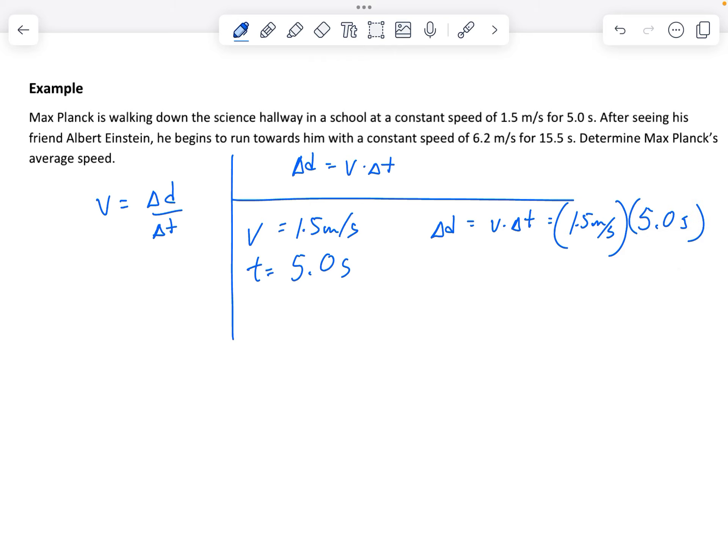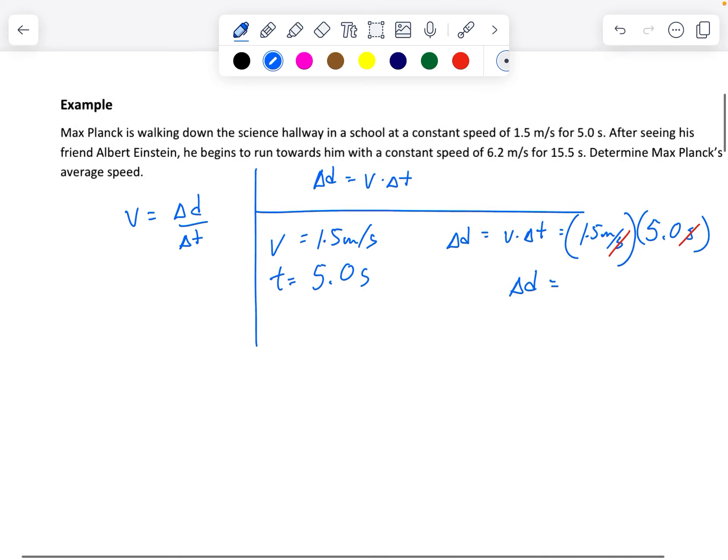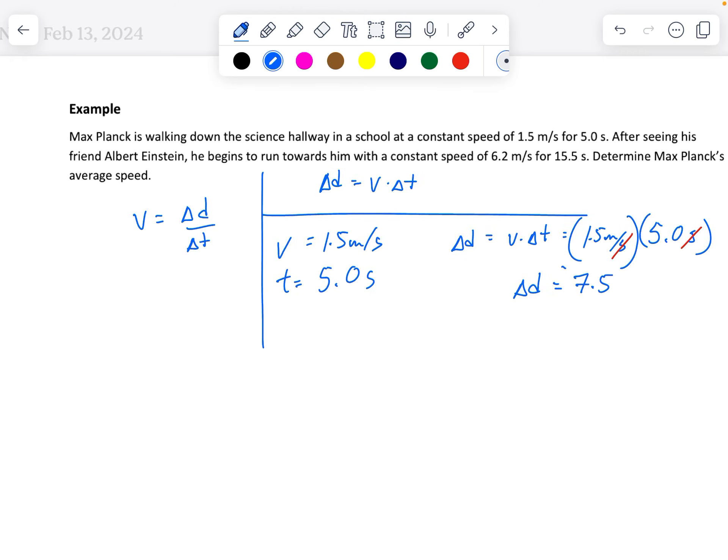Now my units are going to nicely cancel out here where I've got my seconds times meters per second leaves me with meters. So my change in distance is going to be 7.5 meters.